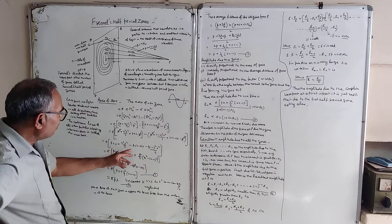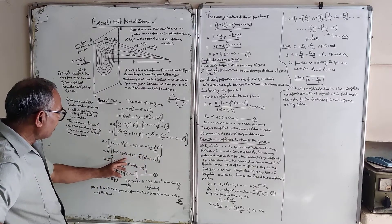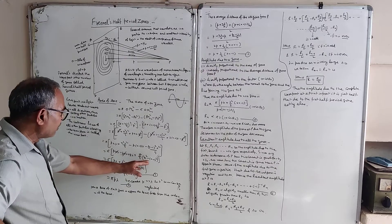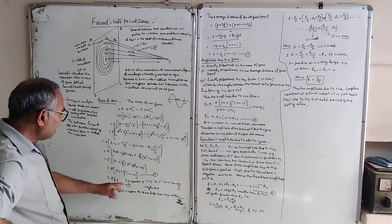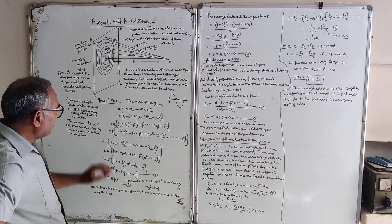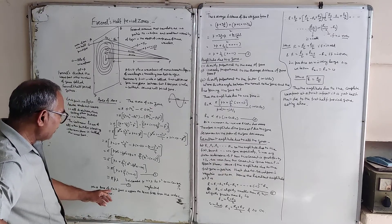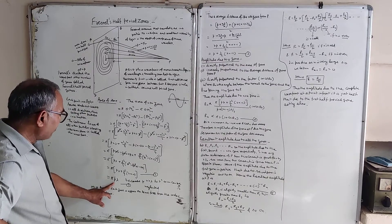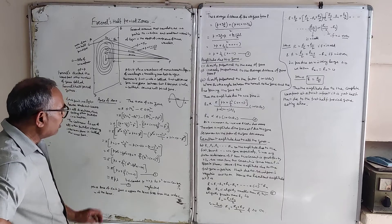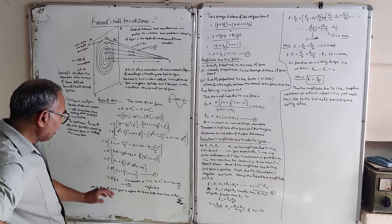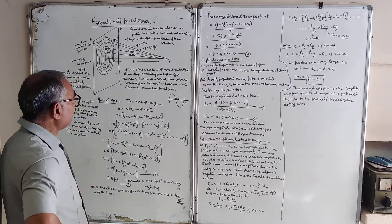After cancellation, the area of the nth zone equals pi times [P·n·lambda + n²·lambda²/4 − P·(n−1)·lambda − (n−1)²·lambda²/4], which simplifies to pi·[P·lambda + lambda²/4·(2n−1)]. Since lambda is very small, the lambda² term can be neglected, so the area of the nth zone equals approximately pi·P·lambda. Hence the area of each zone is approximately the same, independent of the order n.